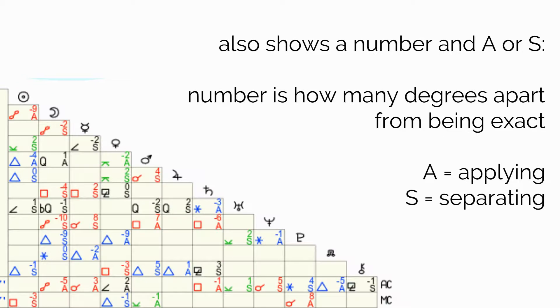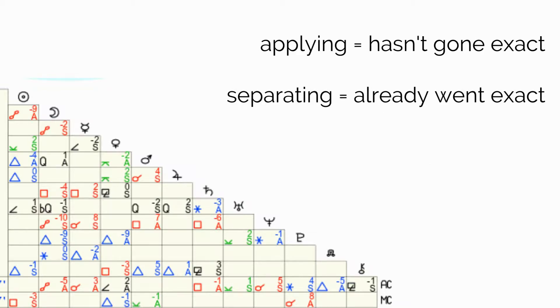They also show a number and an A or an S. Now the number shows how far apart they are from being exact by degree. And the A stands for applying, while the S stands for separating. Applying means the aspect hasn't happened yet, so in the case of your natal chart, it hadn't gone exact yet when you were born. Separating means the aspect already happened, so in the case of your natal chart, it already went exact by the time you were born.